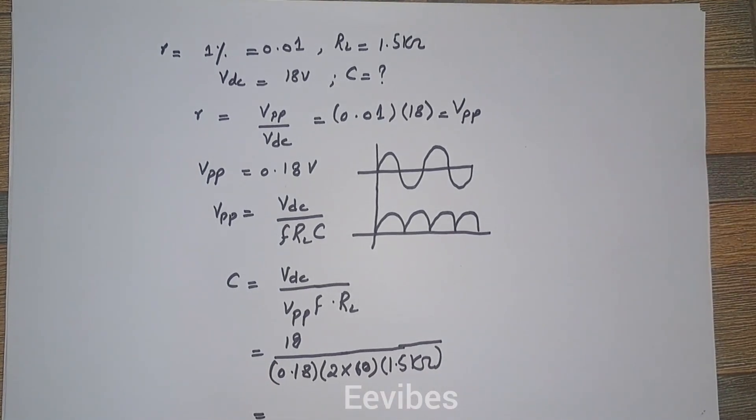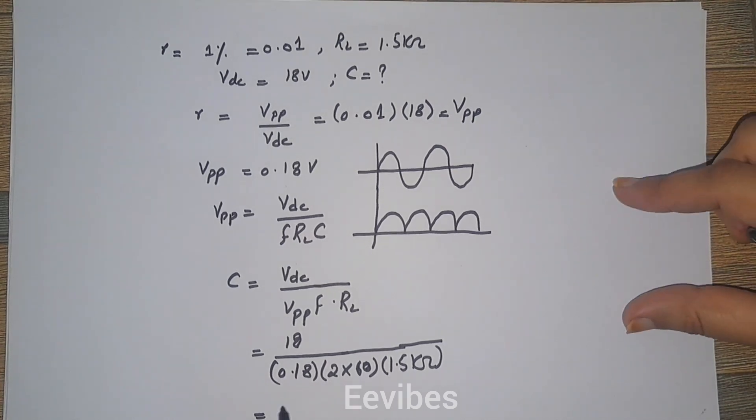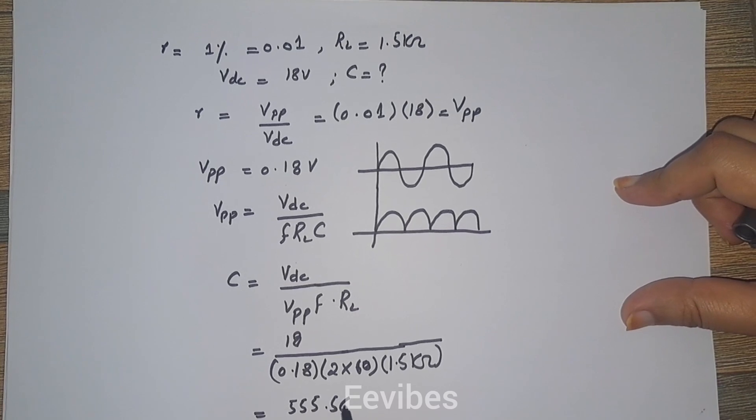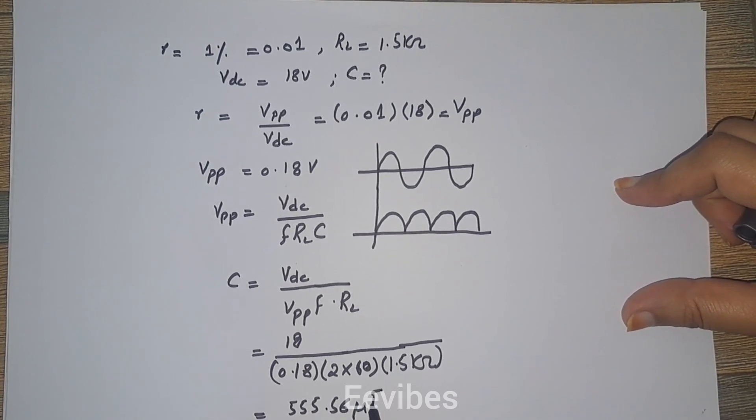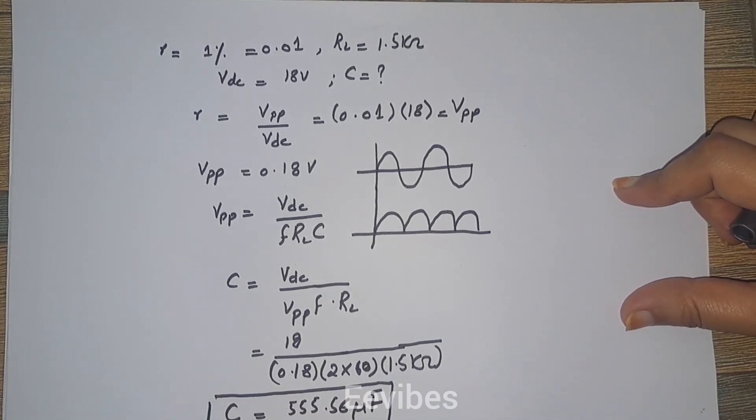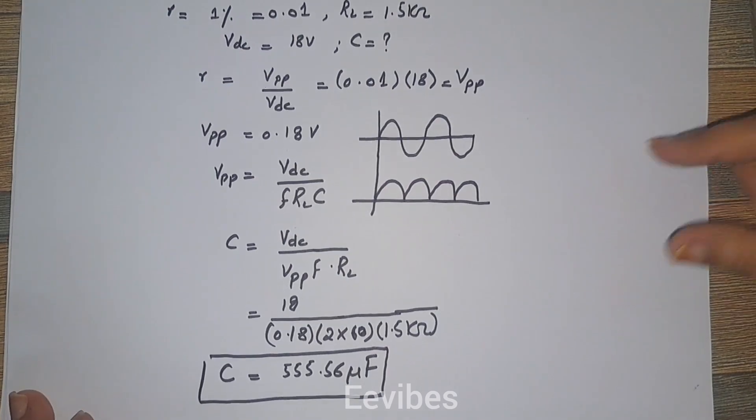When you will evaluate this expression, you will get the capacitance value equal to 555.56 micro farad. So this is the value of the required capacitor that can be used for producing the ripple factor of 1%. Thank you for watching.